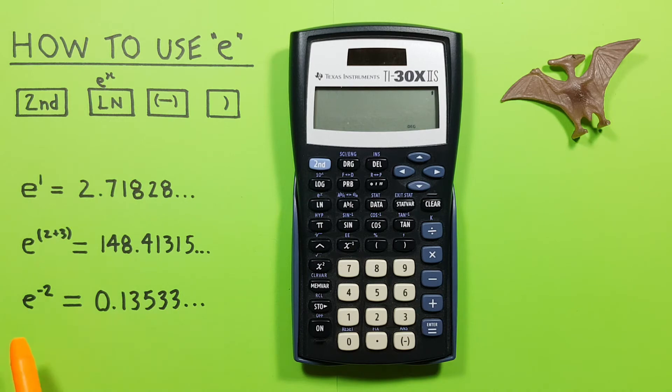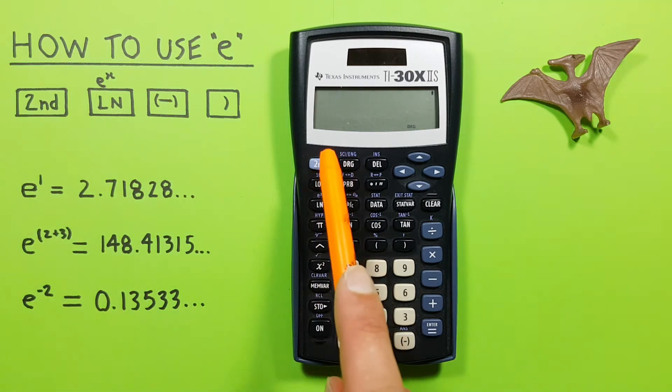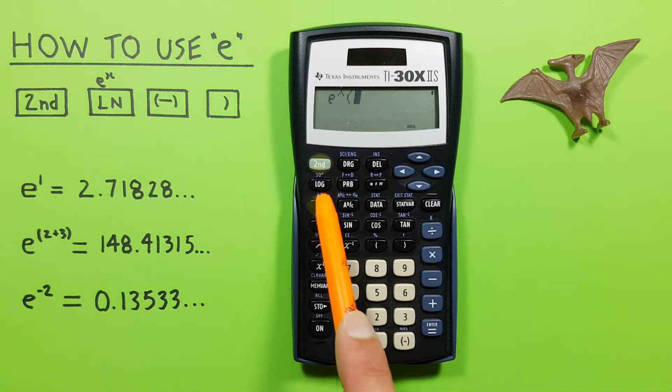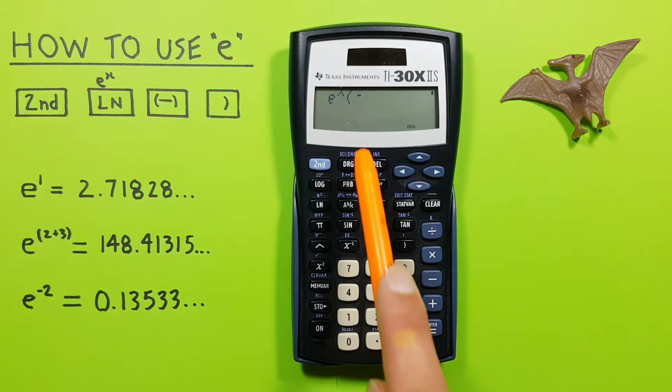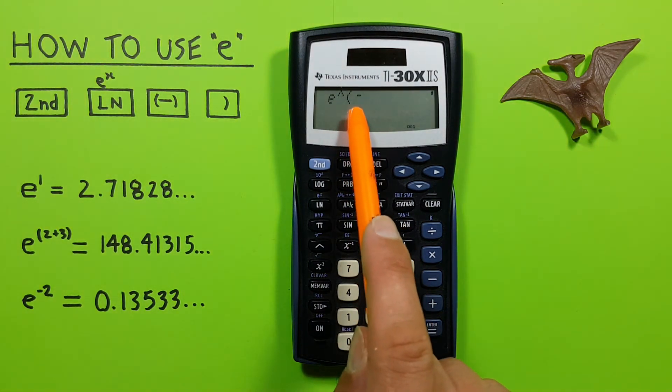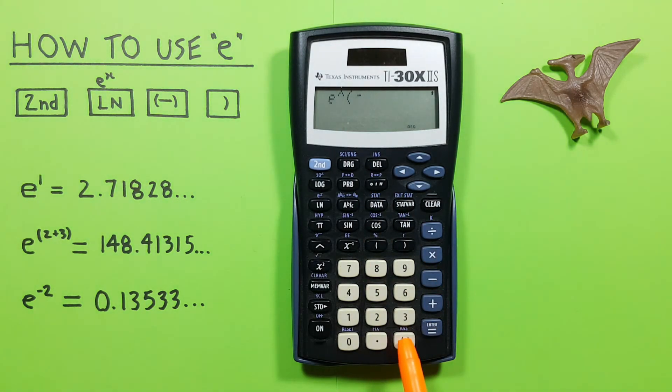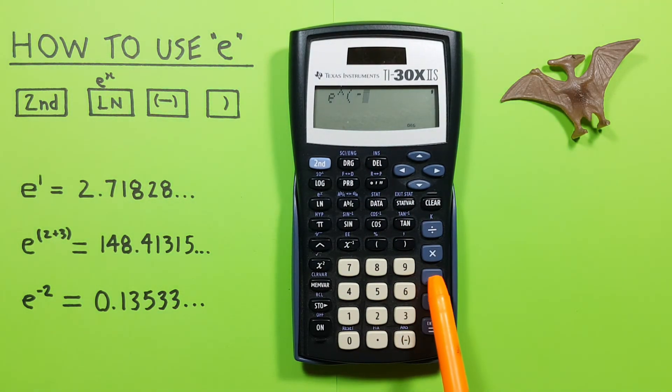What if we want an E with a negative exponent? We start the same way with 2nd, ln, to get our E on the screen, and then we press the negative sign to get the negative there. Notice we use this negative key, and not the subtraction key, because that will give you a different result.